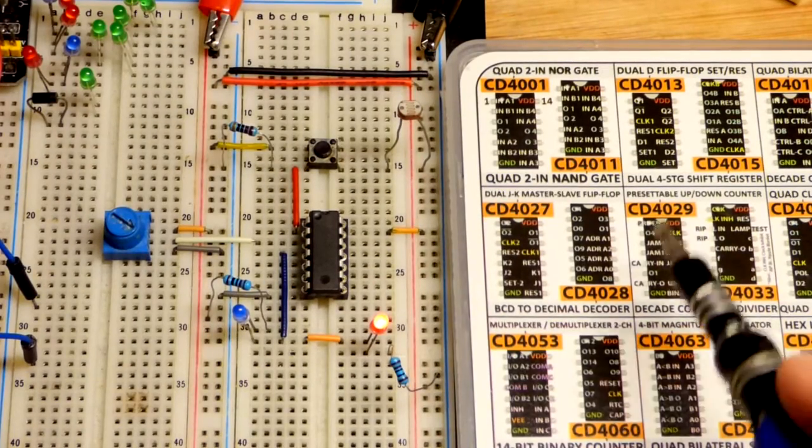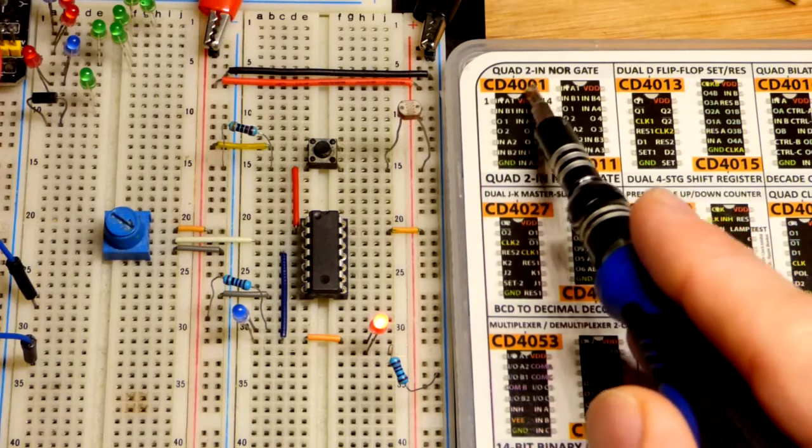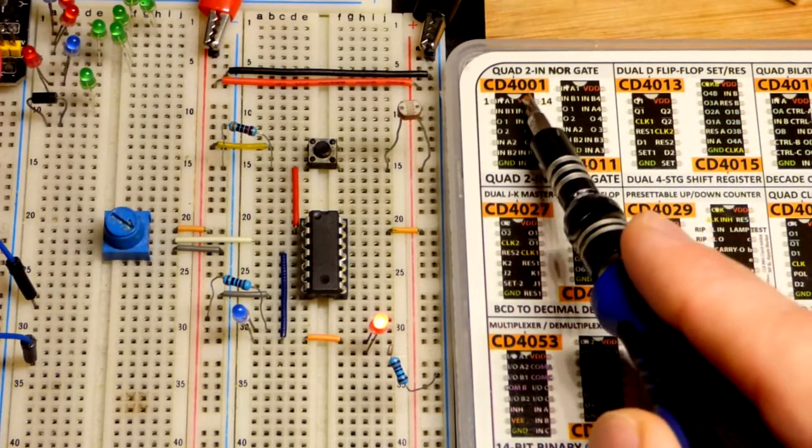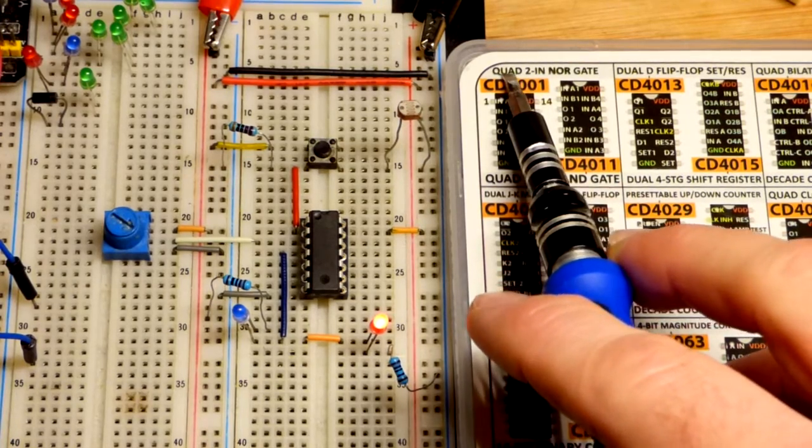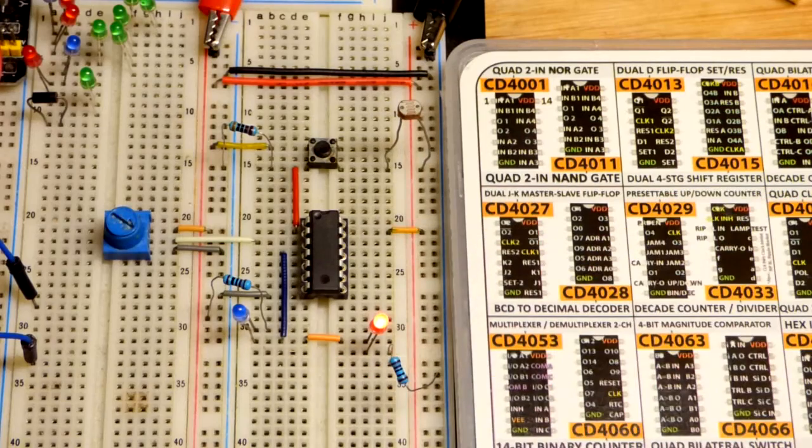I just got this 4000 series integrated circuit kit. They're not all 4000 - some are 4500 and other digits in the four thousands. There are a lot of logic gates here. The quad 2-input NOR gate is the first one I'm going to demonstrate.